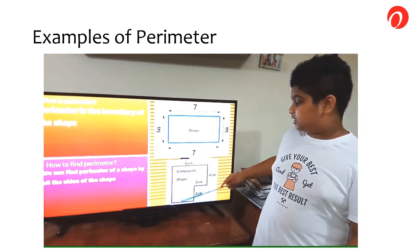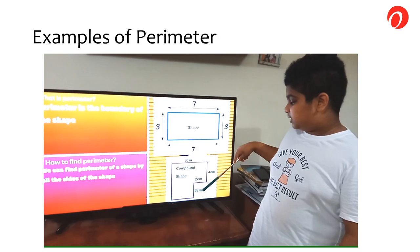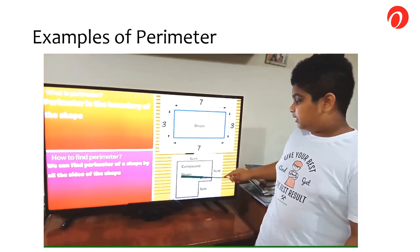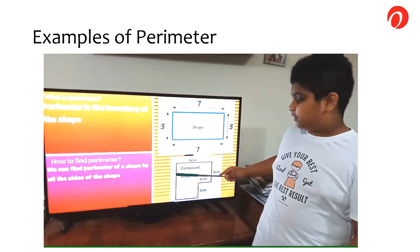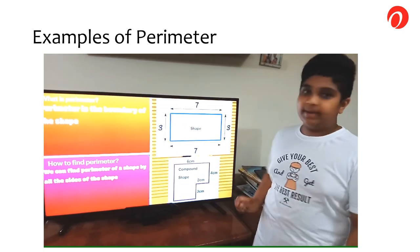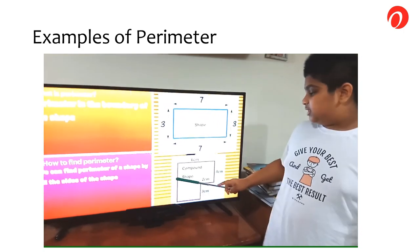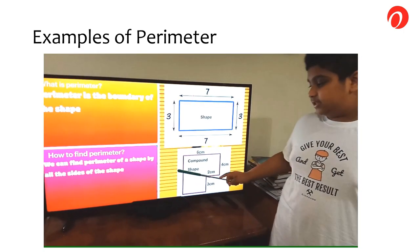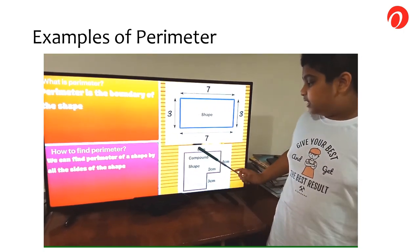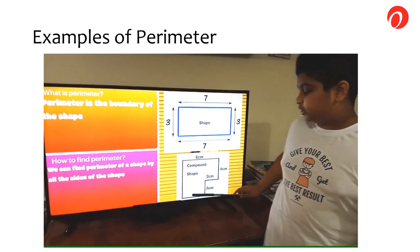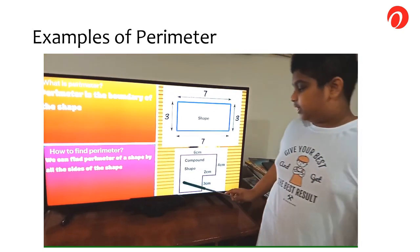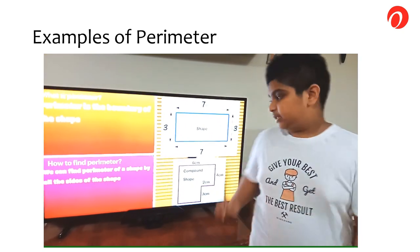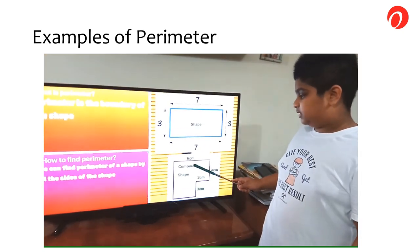As you can see, this is an irregular shape. There is 3 cm, 2 cm, 4 cm and 6 cm, but these two sides are missing. To find them, we can add all up and find the perimeter. This side is 3 plus 4 which is 7 cm. On this side, it is 6 minus 2 which is 4. So when you add all the measurements together, we get 26 cm, and that's the perimeter of this irregular shape.